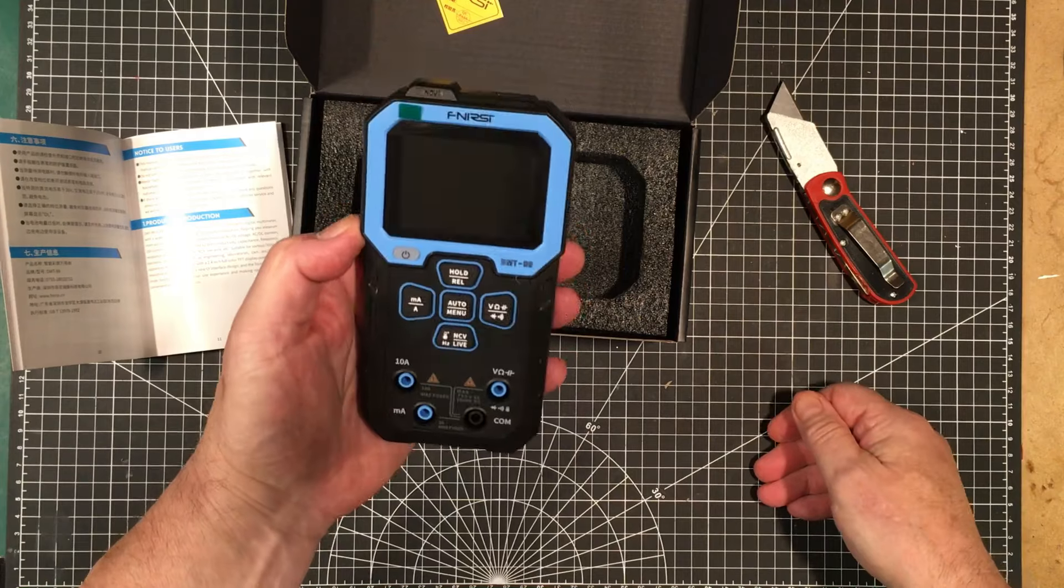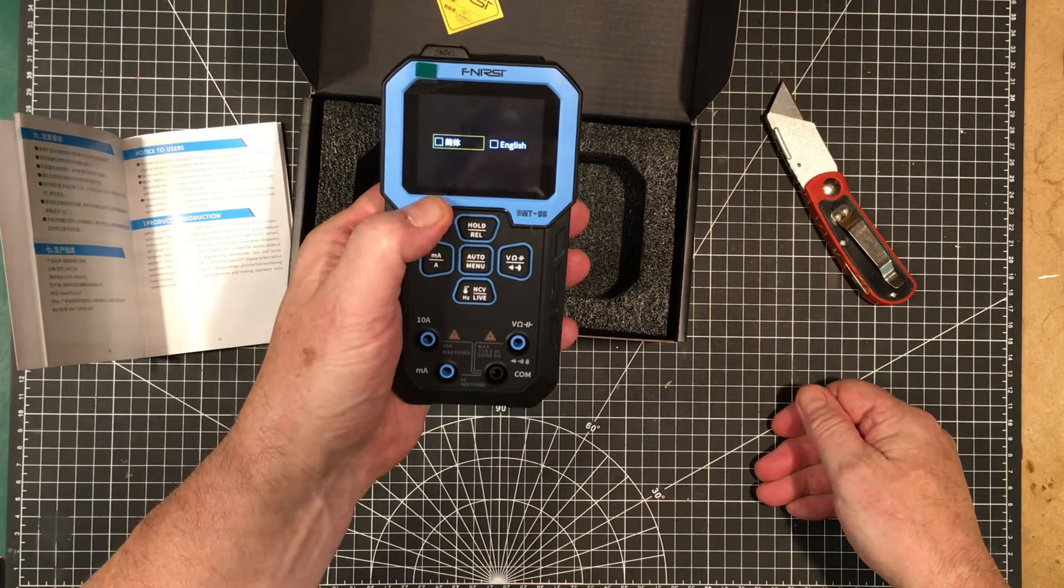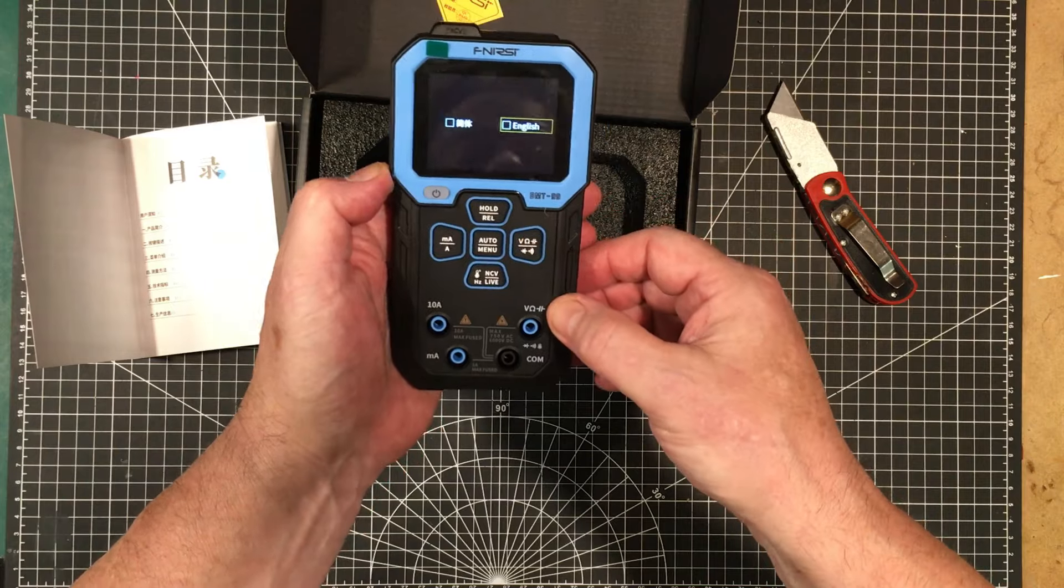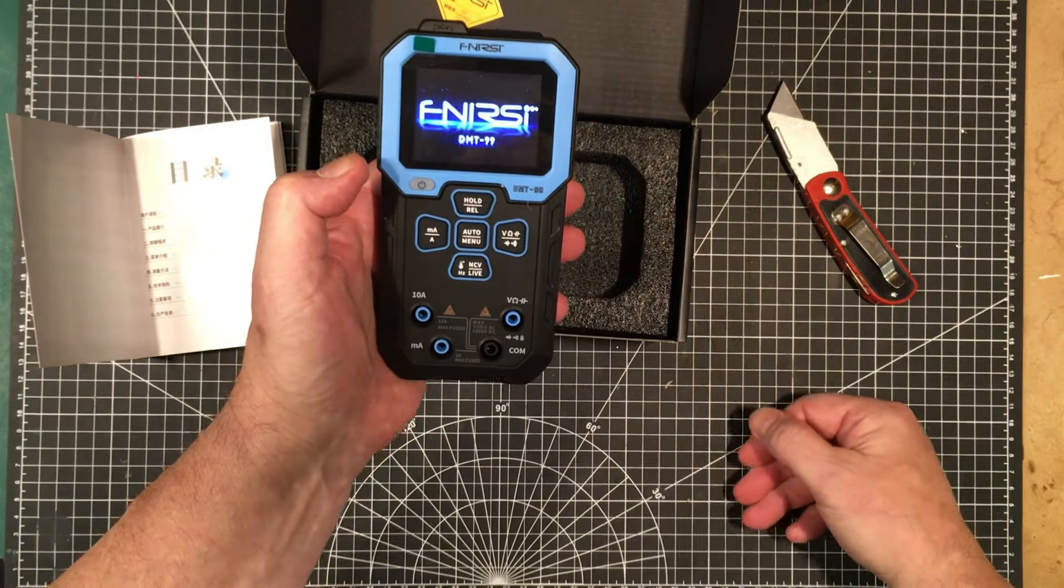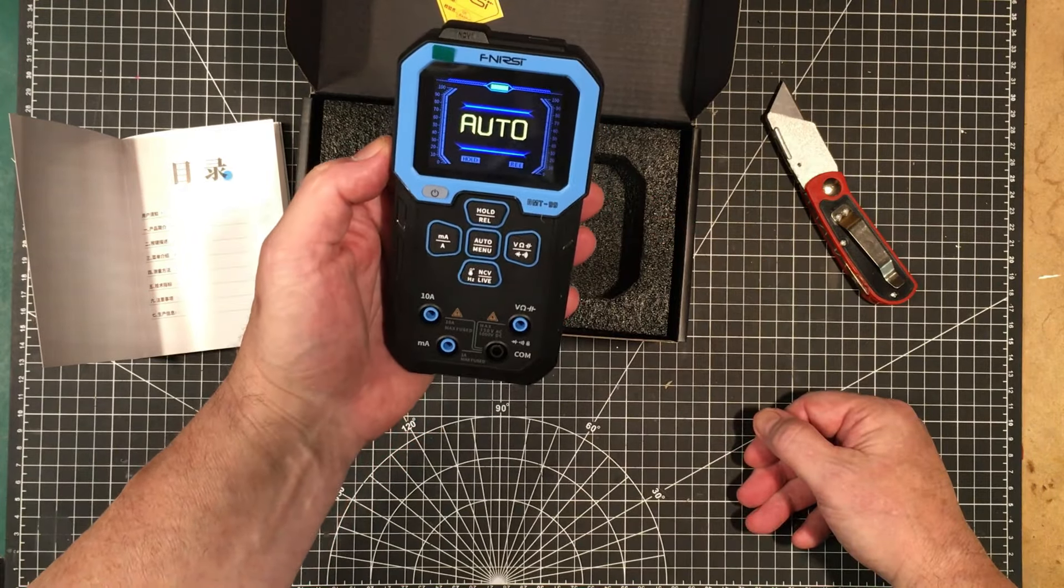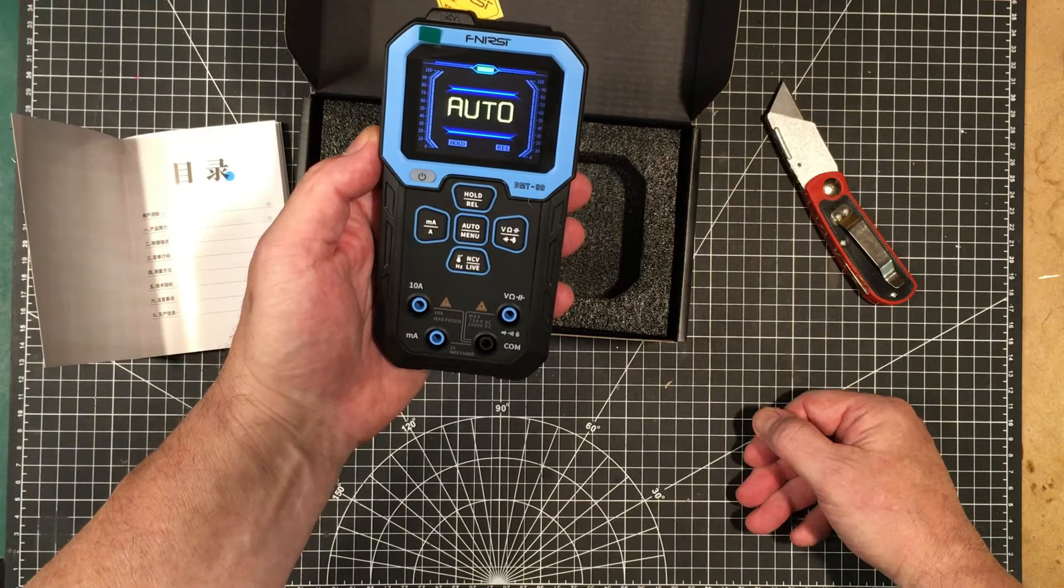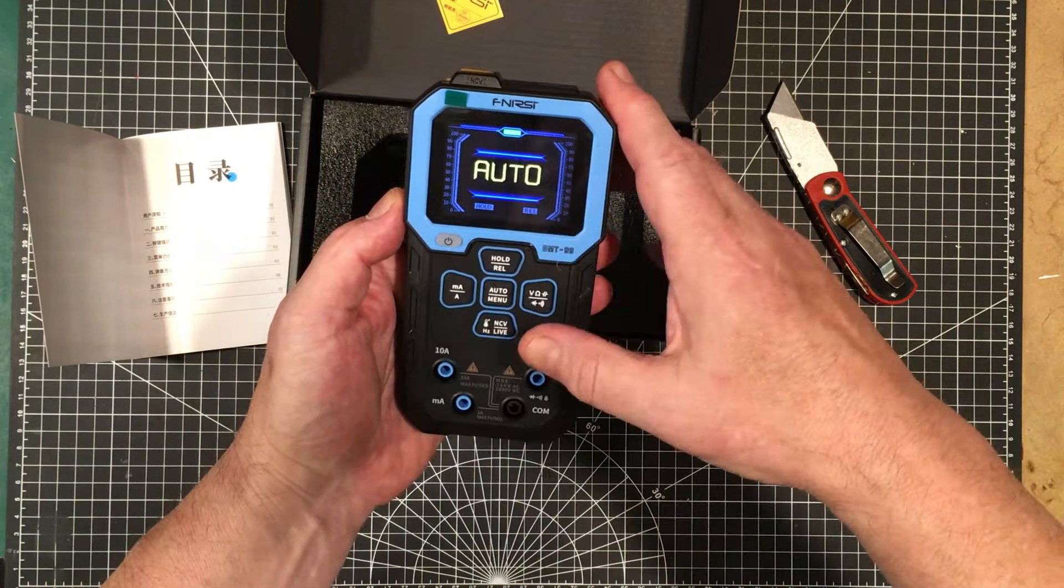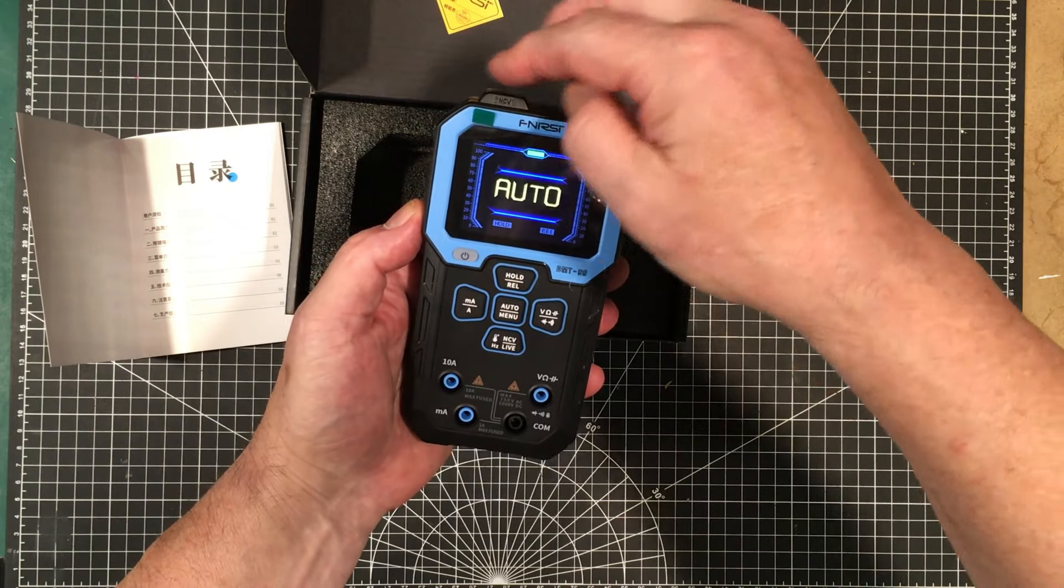Now I wonder if it comes with enough charge on it for me to do this. Probably a good idea to select English in this case. There we go. It boots up pretty quick and it's in auto mode. And the battery looks like it's got a full set of indicators up there if that indeed is the battery indicator.